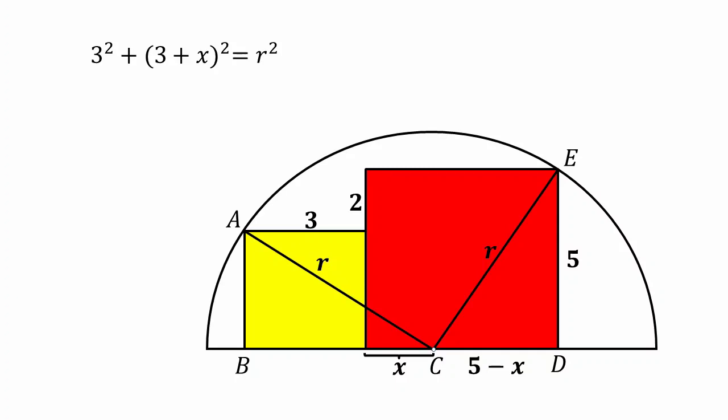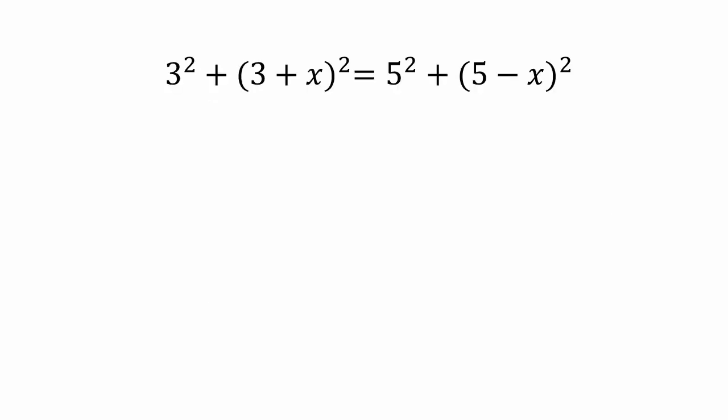Similarly, for triangle CDE, we can write 5² + (5-x)² = R². Both are equal to R². So, we can compare both and we can write like this.